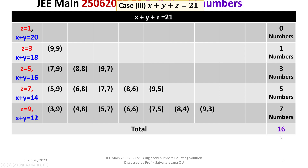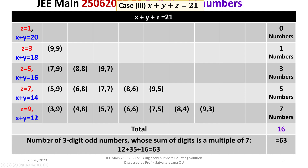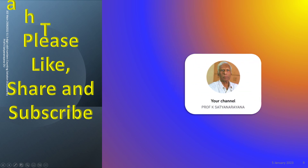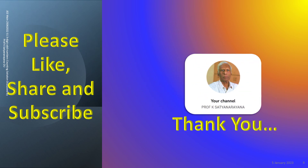Now we sum it up. The total number of 3-digit odd numbers whose sum of digits is a multiple of 7 is 12 (for sum=7) plus 35 (for sum=14) plus 16 (for sum=21), which equals 63. Therefore, the answer for this question is 63. That is the detailed discussion of the solution of this counting problem. I wish you all the best. Thank you.